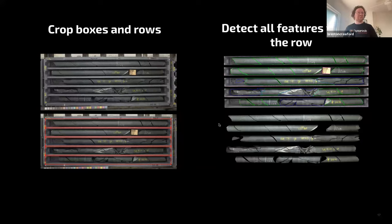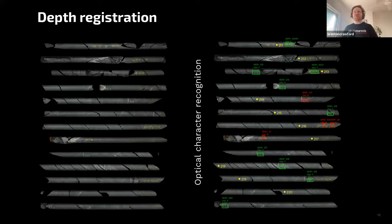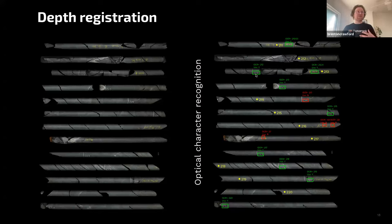Once that's done we end up with isolated geology ready to analyze, with everything else removed. Step two is registering that core in depth space. Depth-registering drill core is a big black hole of complexity that's not done particularly well in industry at the moment, but we can do some things to improve it. The first is trying to read meter marks drawn on the core by hand — automatically interpreting those as reference points for depth.